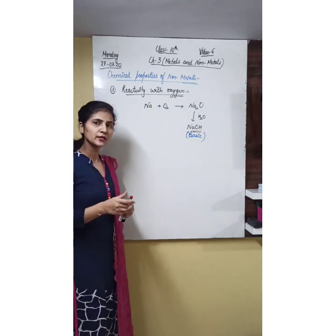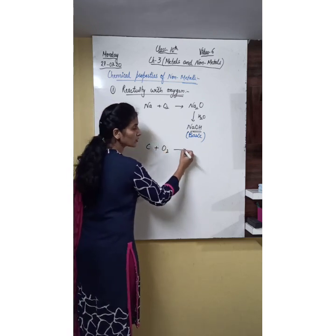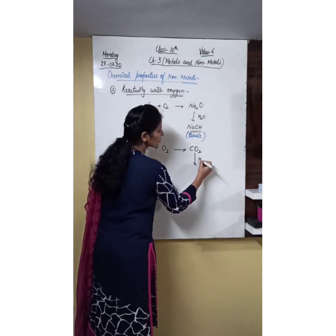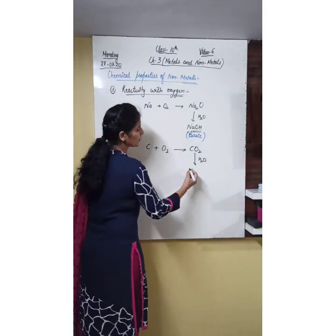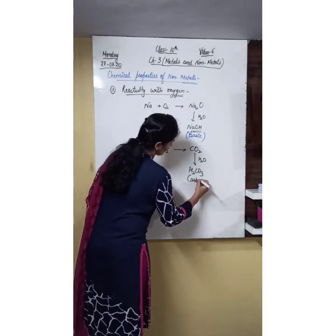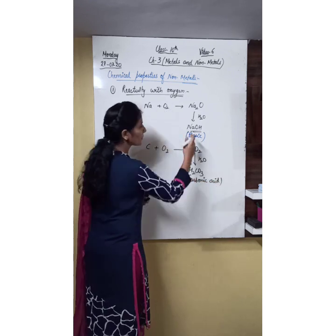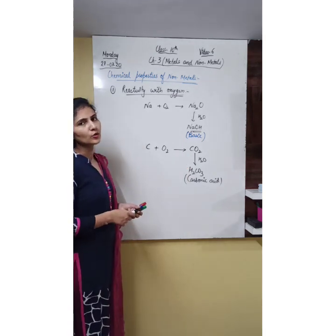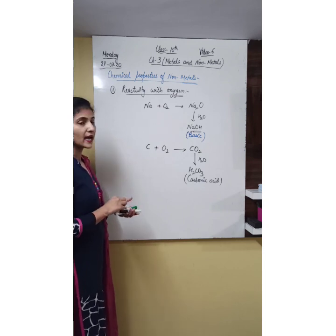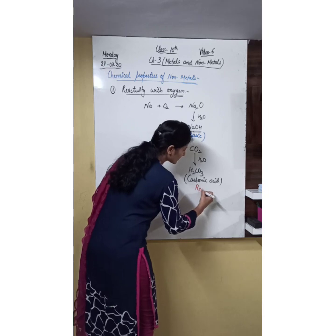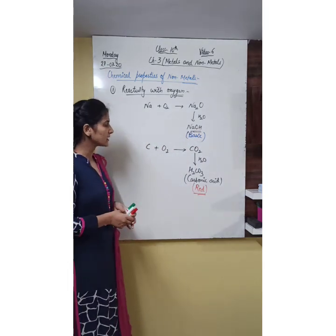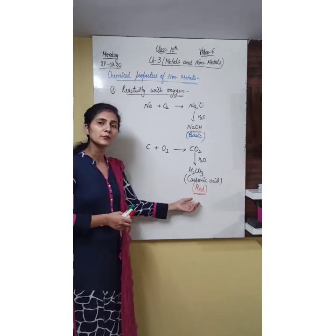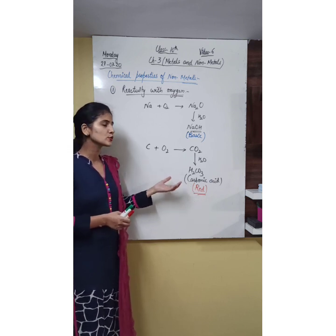Now, non-metals like carbon can also react with oxygen to form their respective oxides, like carbon dioxide. This carbon dioxide, when dissolved in water, forms carbonic acid. So non-metals also react with oxygen to form oxides, and these oxides dissolve in water to form acids. Carbonic acid turns blue litmus to red — that is why we call it an acidic oxide.